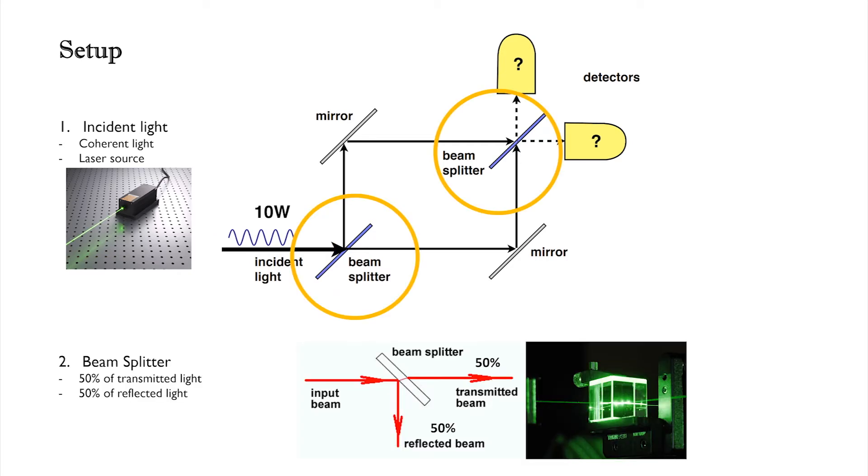Two symmetric beam splitters, which are semi-silvered mirrors. An ideal beam splitter can split the light into 50% of transmitted light and 50% of reflected light.